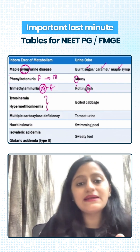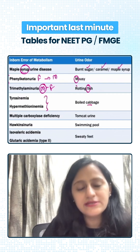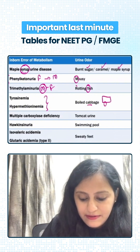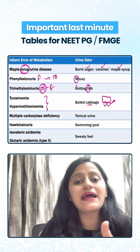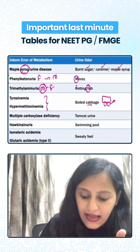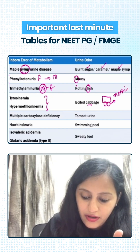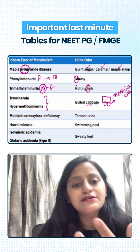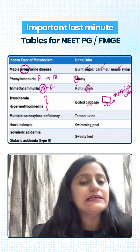Tyrosinemia and hypermethioninemia have boiled cabbage odor. Imagine there is a cab which has a tire — cab car tire. Cab is cabbage, tire is tyrosinemia, and this is the methionine cab. Remember methionine cab to recall that this is hypermethioninemia.